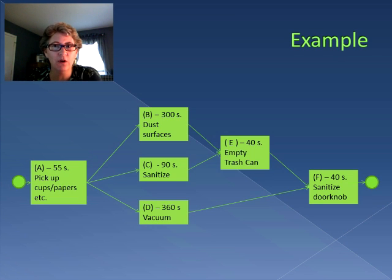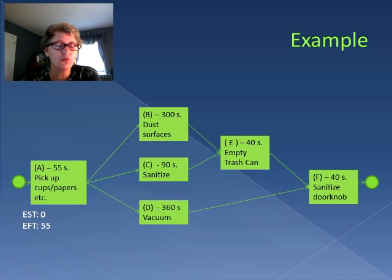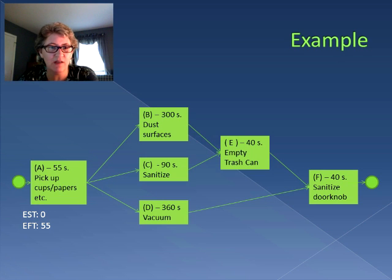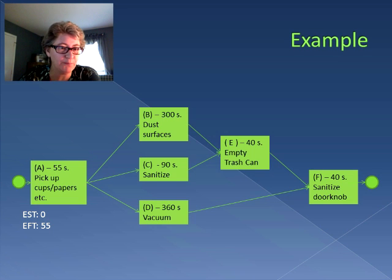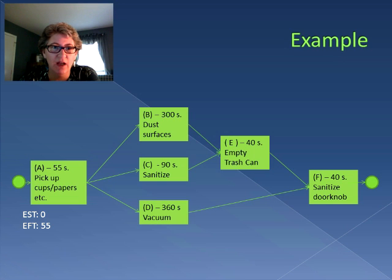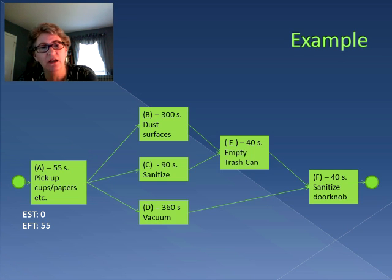We're going to take a forward pass through the flow diagram starting with Activity A. It starts right at time zero — it's the first activity in the entire process. So at time zero that's when the activity can start, and then we add the 55 seconds that the activity lasts, so we know that it can finish at time 55.